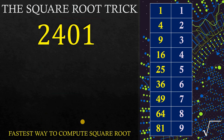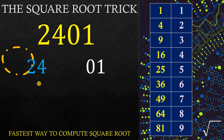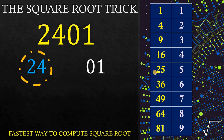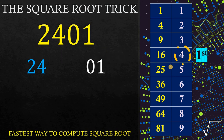Now let's have another example to practice our new learning. What we're going to do is to divide this number by 2s from right to left. This gives us 24 and 01. The first digit comes from 24. Now 24 is between 16 and 25. As always, choose the smaller digit, so this corresponds to 4. Therefore, 4 is our first digit.